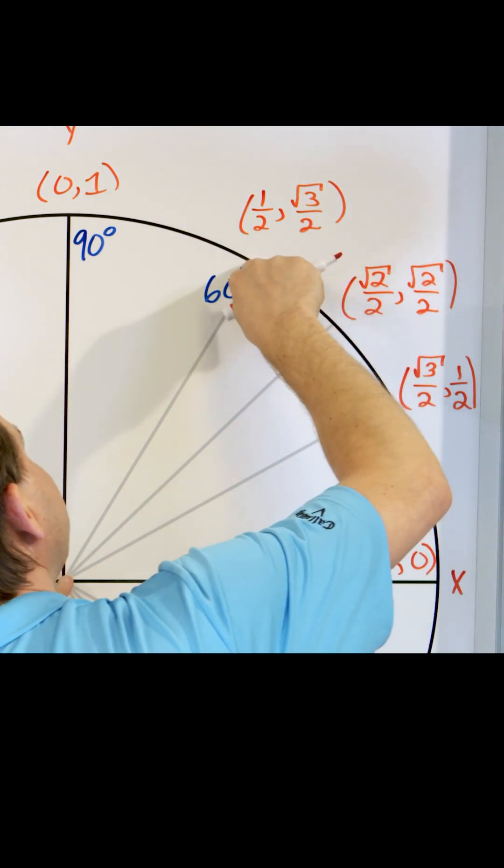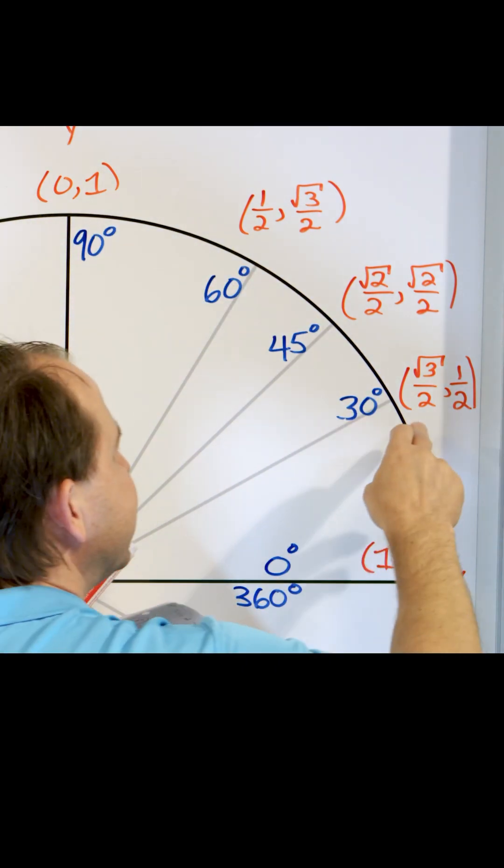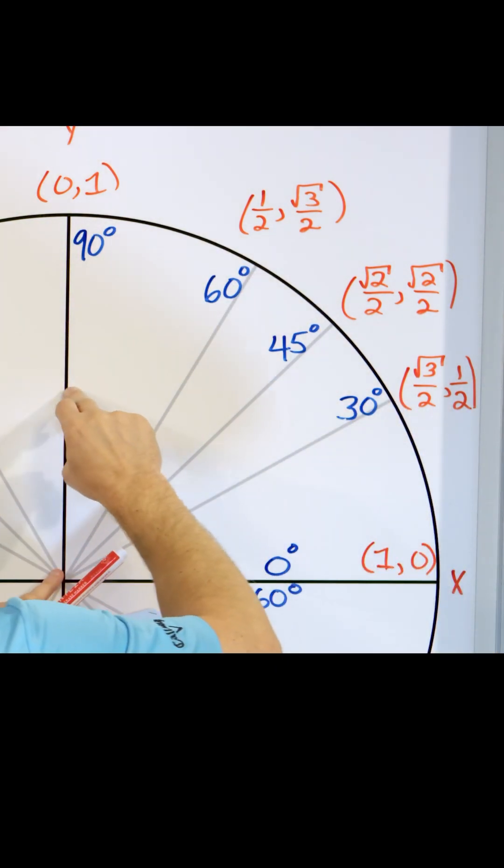These other points on the unit circle are just the sines and cosines of these numbers here. The cosine is the X value and the sine is the Y value.